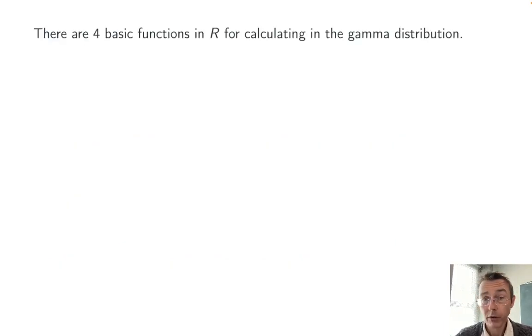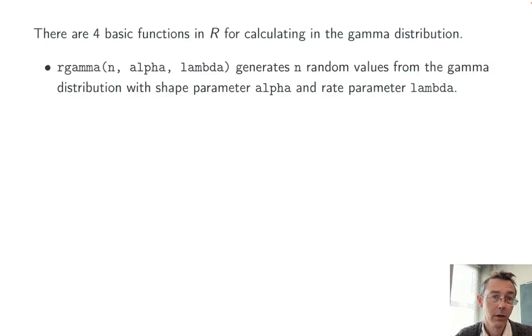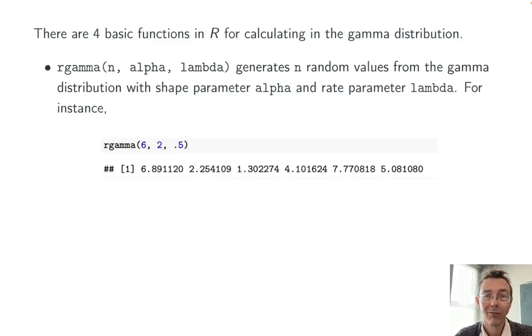There are four basic functions in R for calculating with the gamma distribution. First, rgamma generates a specified number of random values from the gamma distribution with shape parameter alpha and rate parameter lambda. For instance, rgamma(6, 2, 0.5) gives six random values for the time needed to get two occurrences of a randomly occurring event which occur with a mean density of one-half per unit time, so on average waiting time between events of two.